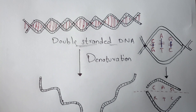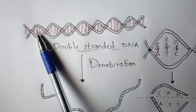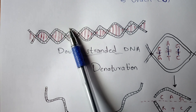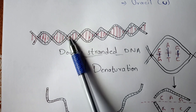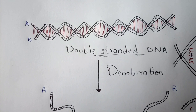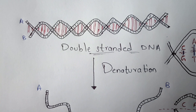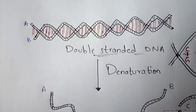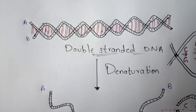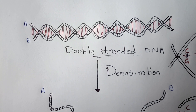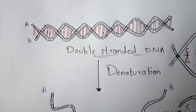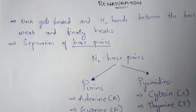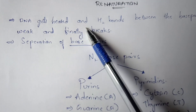First, you have to understand the diagram. This is the double-stranded DNA. Double-stranded DNA mainly consists of two strands — strand A and strand B. Between each of the strands there is a formation of hydrogen bonds, and these hydrogen bonds are mainly present between nitrogenous base pairs.